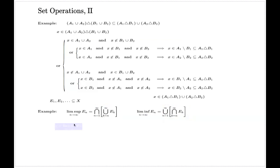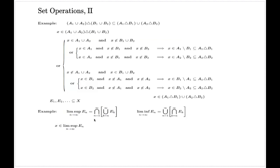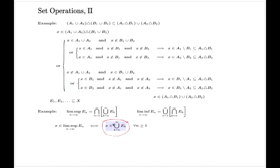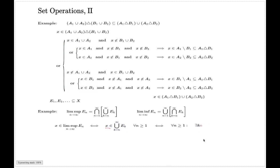Let me analyze what lim-sup means. If I pick an element from lim-sup, and X belongs to the infinite intersection, it belongs to every element in that intersection. So for every n, X belongs to this union. This union means X belongs to one of these E_k's — not necessarily all of them, but at least one. So for every n, there will be some k greater than n such that X belongs to E_k.